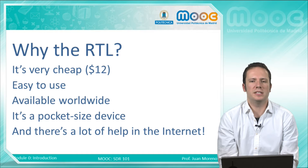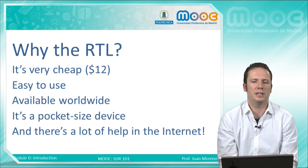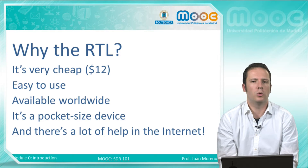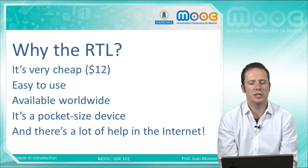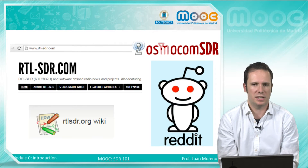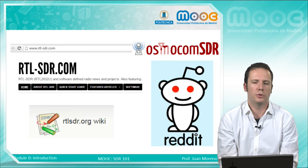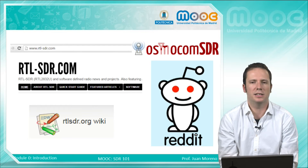Why do we use this RTL? We use this hardware because it's the radio equivalent to the Raspberry Pi or the Arduino modules that you may probably know. It's a very cheap device — it costs no more than 12 or 15 dollars. It's very easy to use, as you will see in the course. It's available worldwide and it's a pocket-sized device. Perhaps the most important reason is because there is a lot of help on the internet, with websites available to help you through the course. You will also have all our help and the help of your colleagues in the forum and in the social networks.